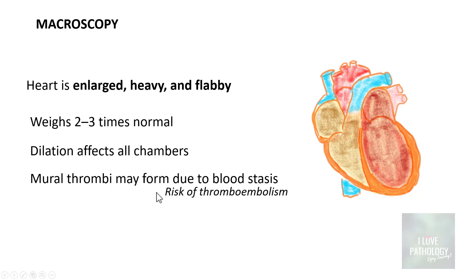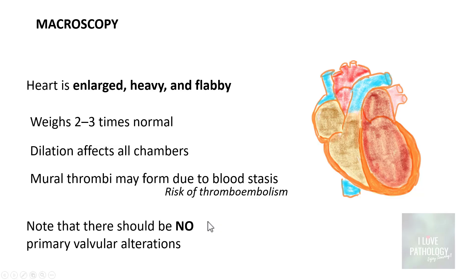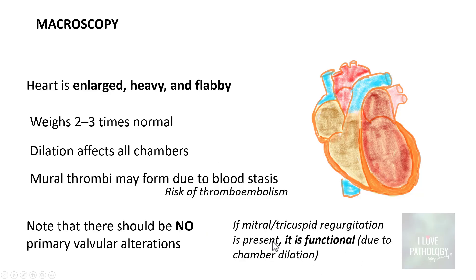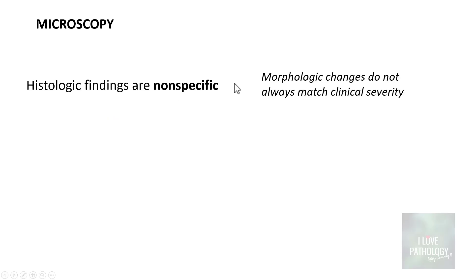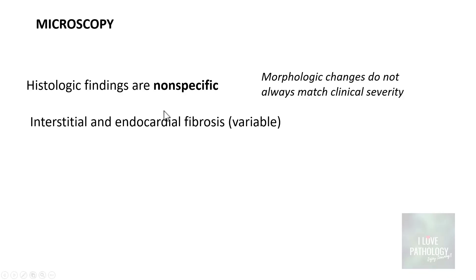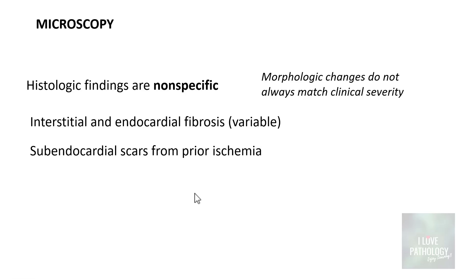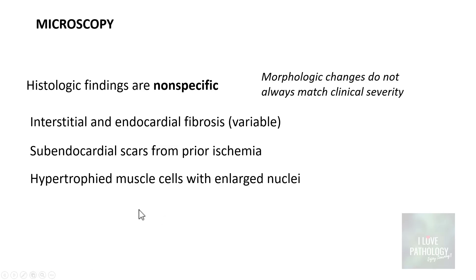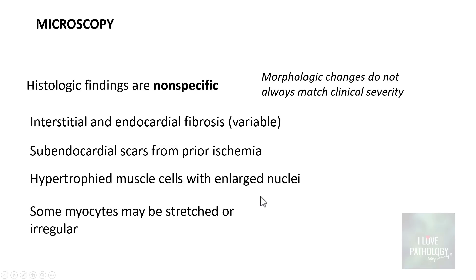When there is dilation, stasis can result in mural thrombi, creating a risk of thromboembolism. There should be no primary valvular alterations; any valvular abnormalities are due to functional changes from chamber dilation. Histological findings are very nonspecific — there can be variable fibrosis including interstitial and endocardial fibrosis, subendocardial scars suggesting prior ischemia, and hypertrophied muscle cells with enlarged nuclei.